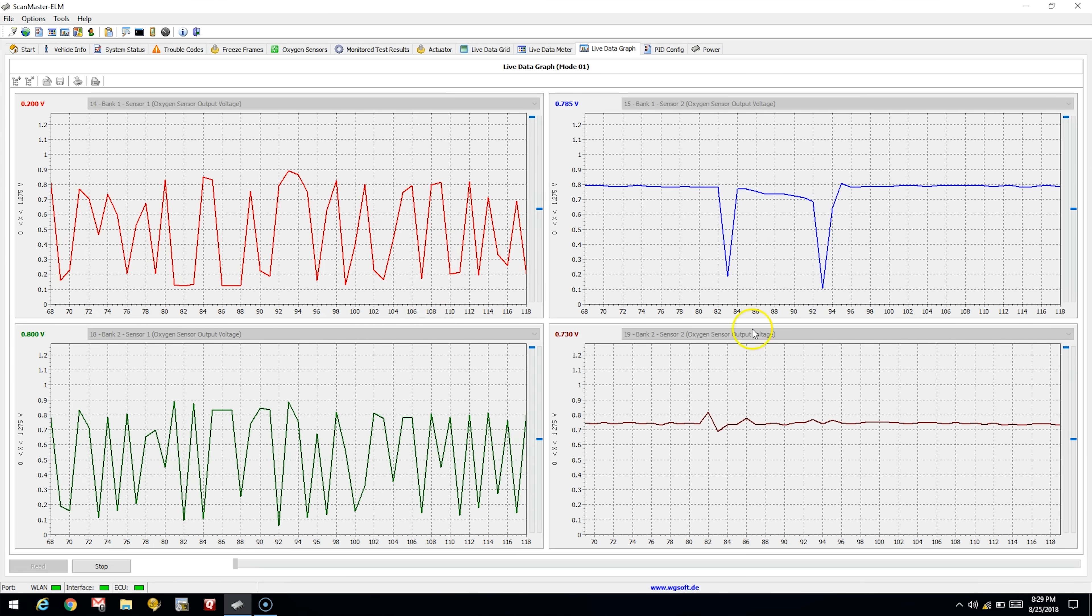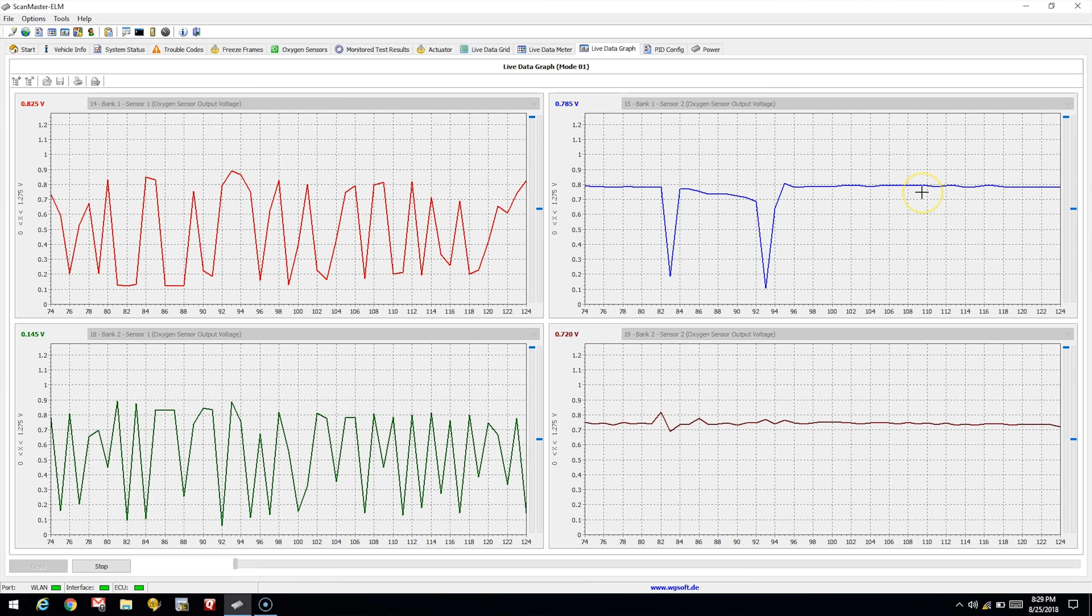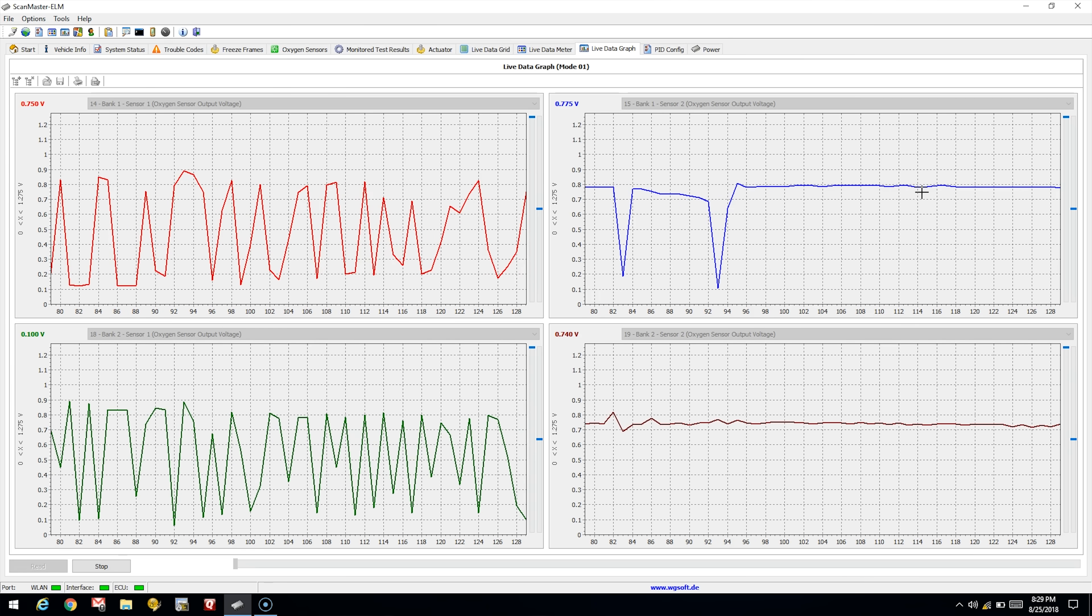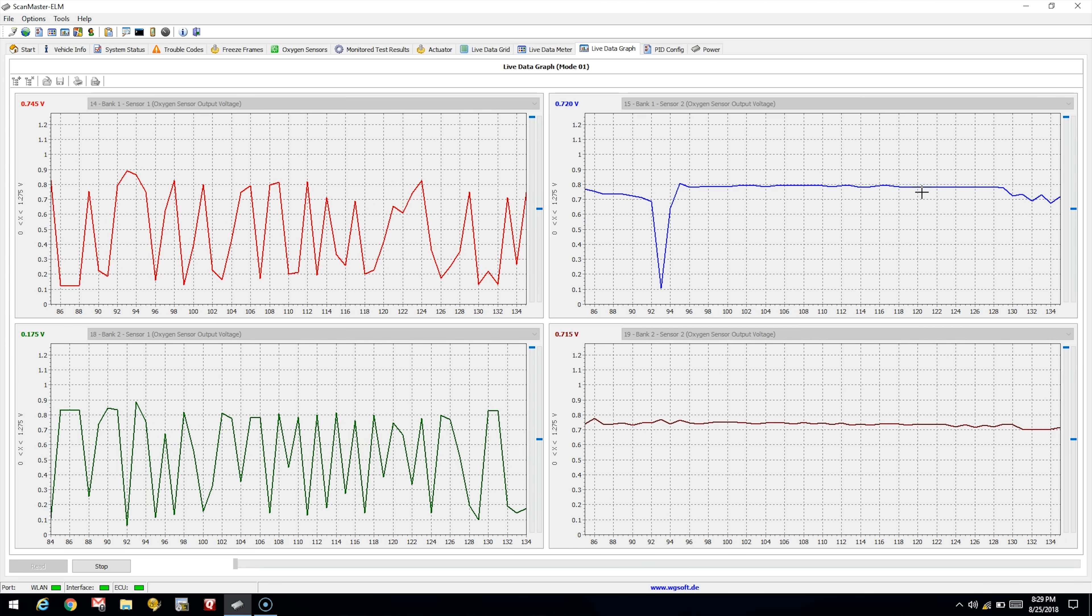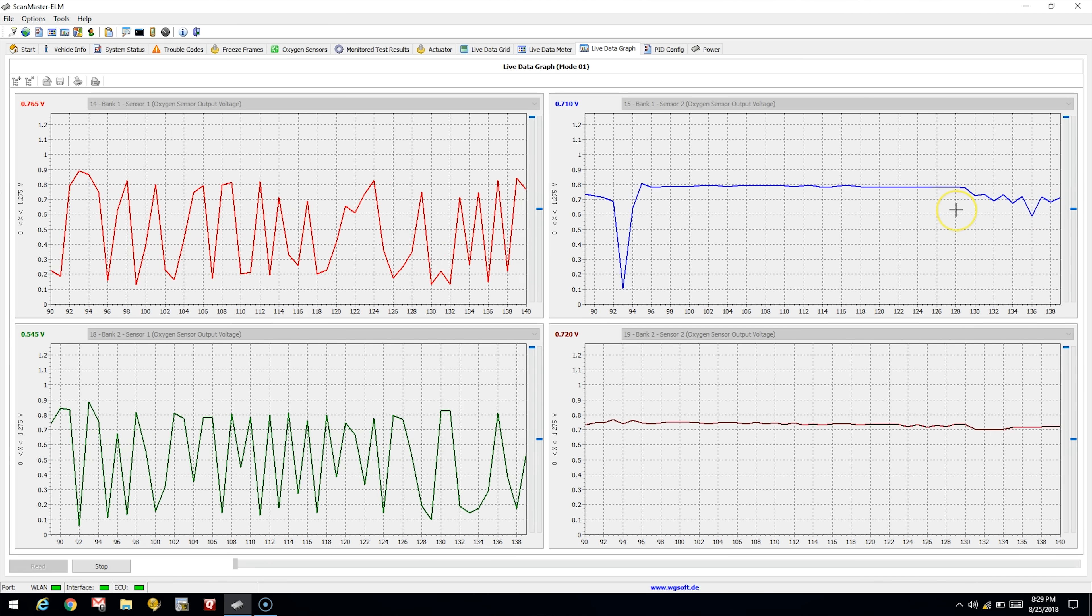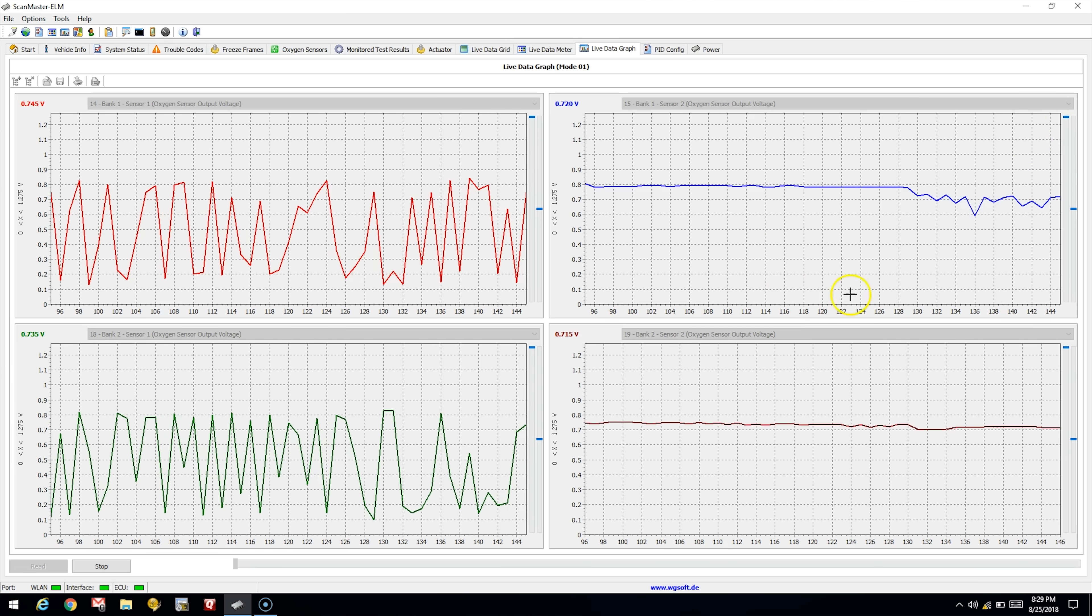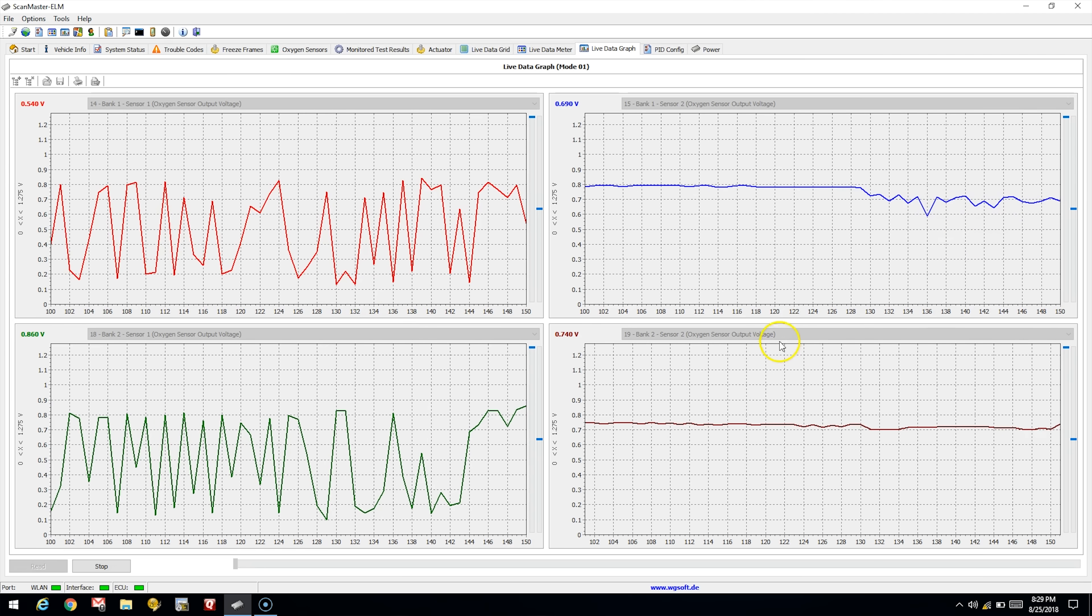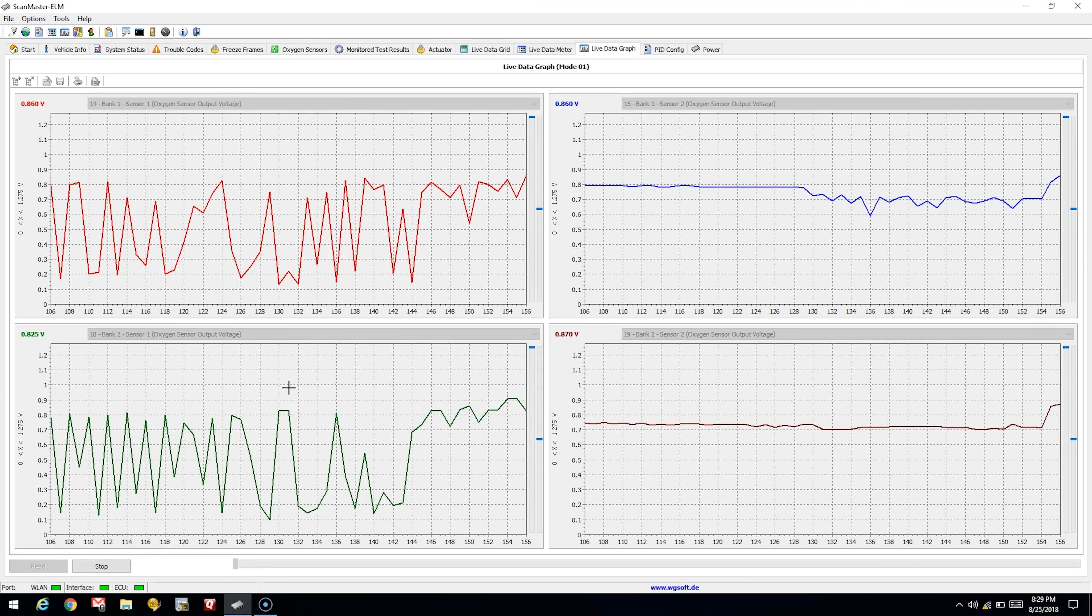Now the big test, we got to raise the revs to about 2000 or whatever. Just pick something, hold it steady. And we are looking great. As you can see, we're basically holding, small variations here that I'm not too worried about that, but yeah, we're holding. As you can see, it's much, much better than it was before. Basically the bank two sensors were matching what the bank one sensors were doing. Now you can see these cats are working. So yeah, this is a fix. So yeah, that should be good enough to get us past the smog man.